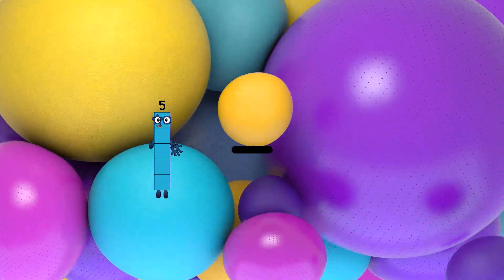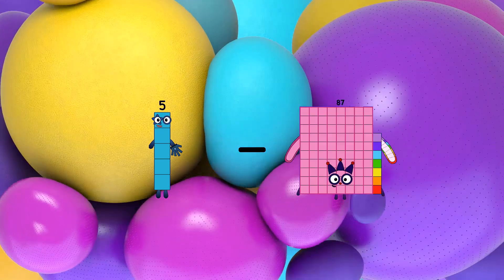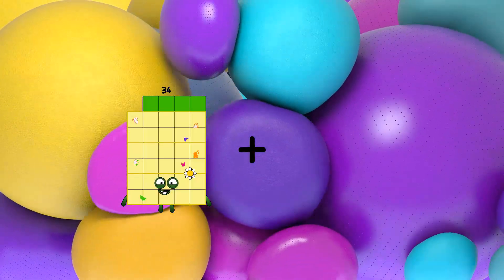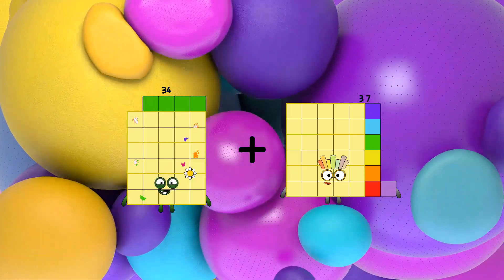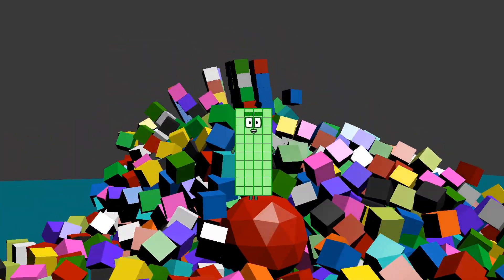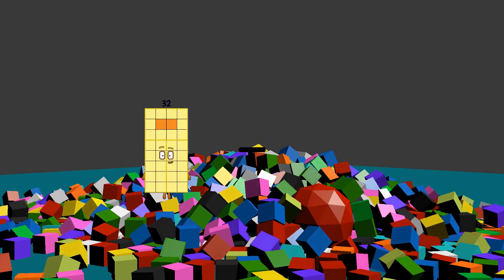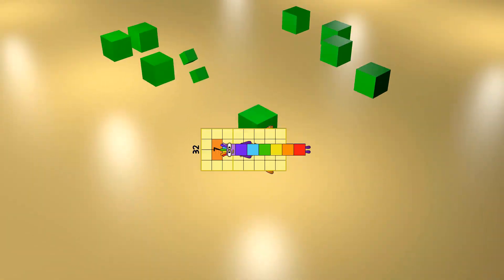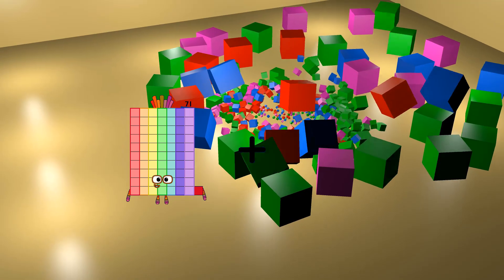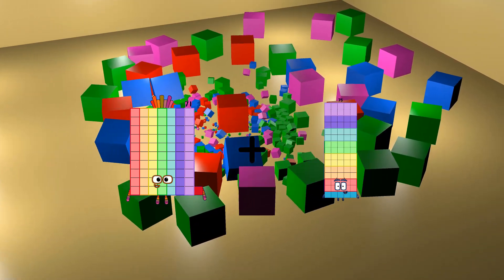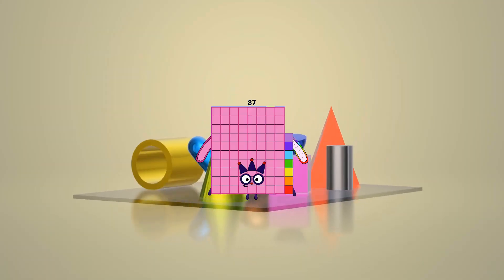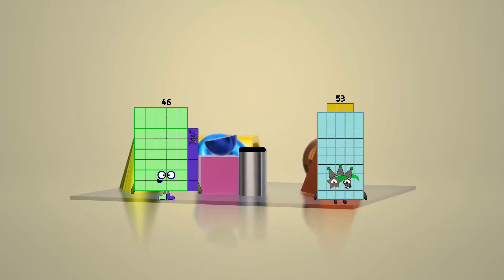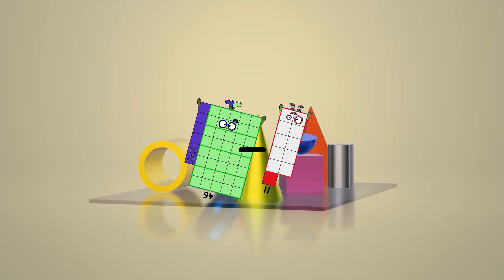5 minus 1 equals 4, 34 plus 6 equals 40, 32 minus 7 equals 25, 71 plus 16 equals 87, 46 minus 11 equals 35.